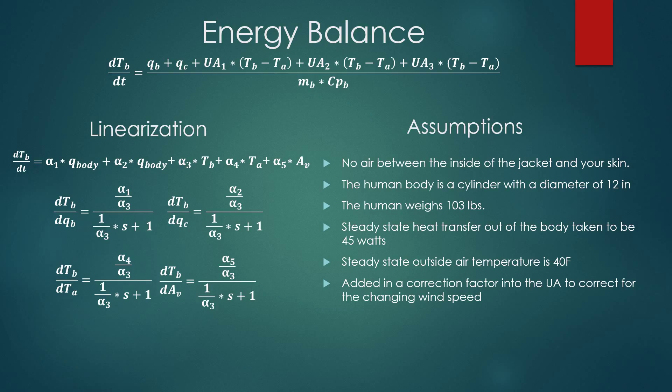So our manipulated variables were our area of the vents and our Q supplied by the coils, and then our disturbances were the outside temperature air and then also the heat supplied by the body. And we made a couple assumptions that come with linearizing. We assumed some steady state values, and then we also assumed that there's no convection in between your skin and the inside air of the jacket. We assumed that the jacket was right on your skin.